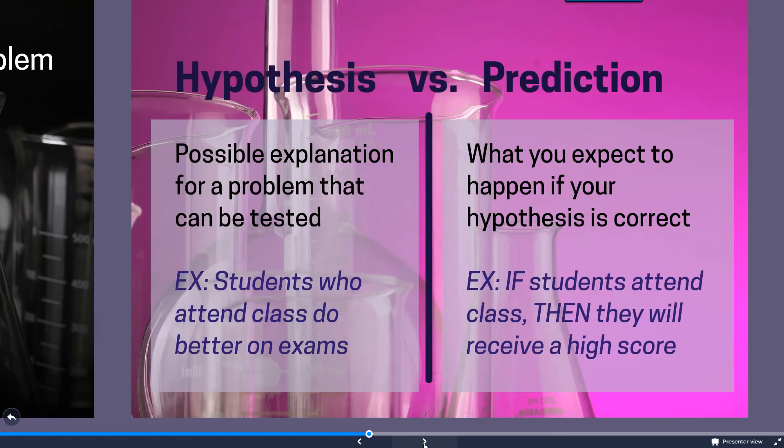Now it's important to note that there's a very specific difference between a hypothesis and a prediction. A hypothesis is going to be a possible explanation for a problem that can be tested. So for example we could say students who attend class do better on exams because they're coming to class to learn the material.